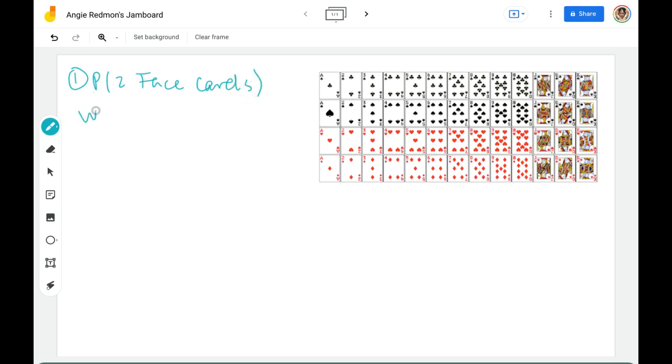Again, this is without replacement, which means we're going to draw a card and not put it back in the deck. First we need to know a little bit about the deck of cards. There are a total of 52 cards in the deck. So n is equal to 52. That's my total. My face cards are over here.